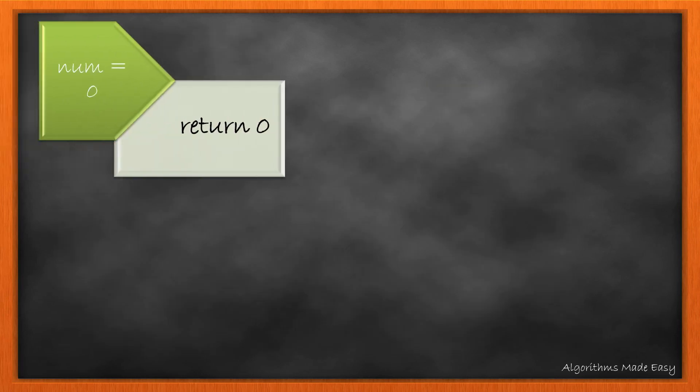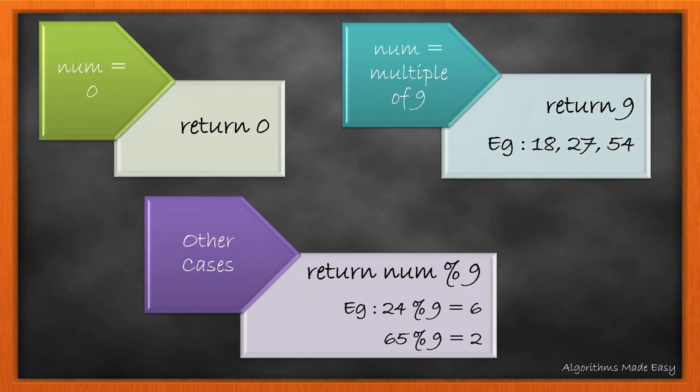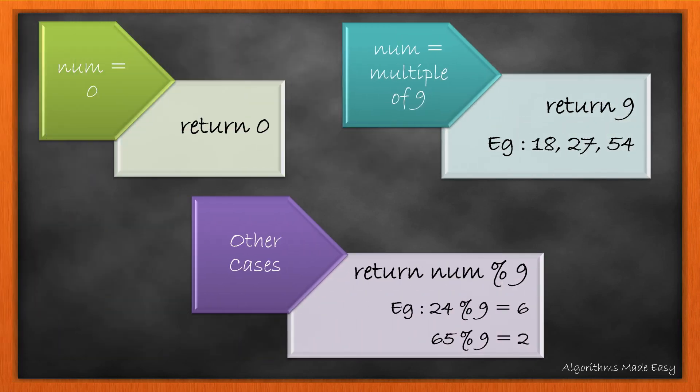We can draw the following inferences from the previous table. For 0, the digital root will be 0. For the multiples of 9, it will become 9, and for all the other cases, it will be number mod 9.